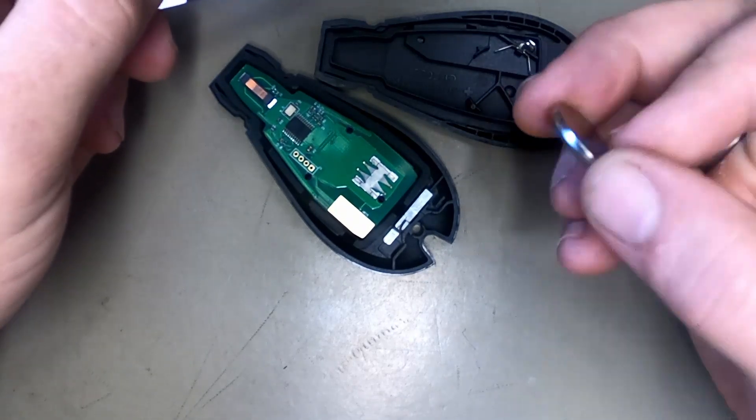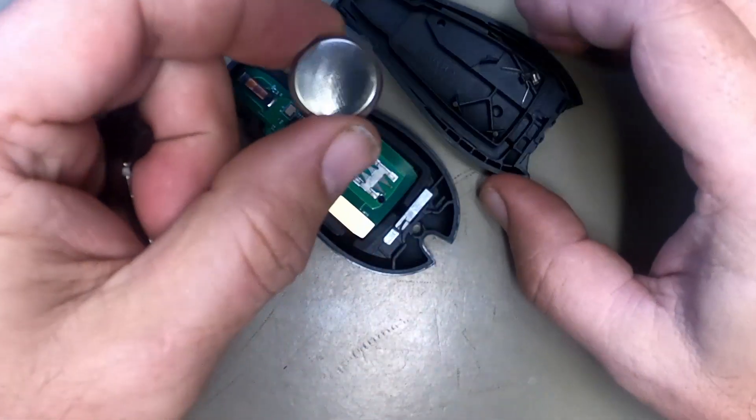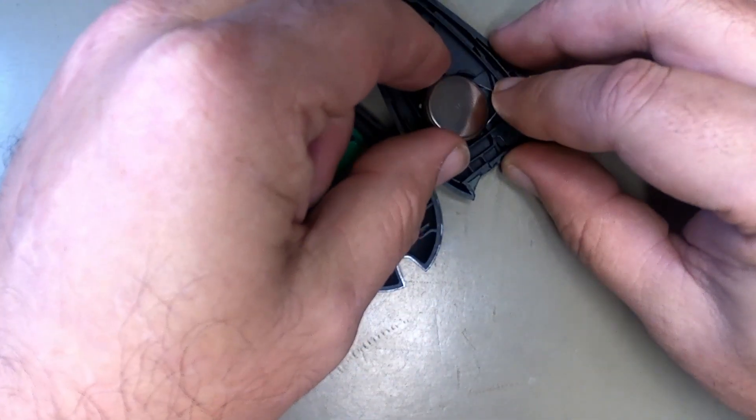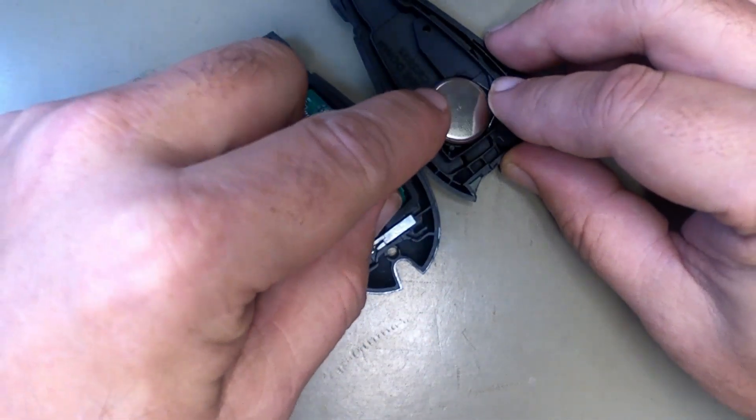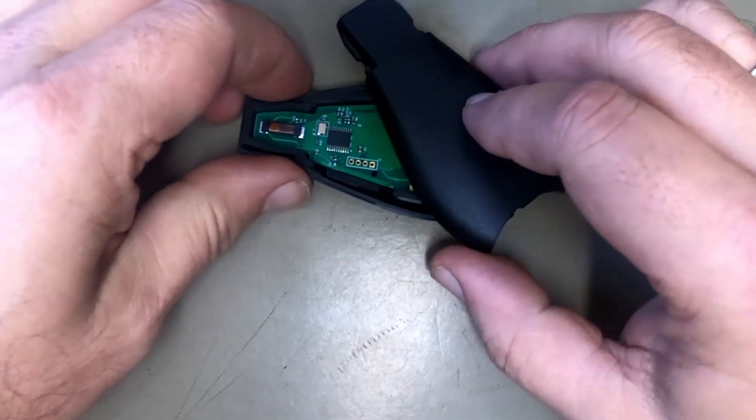So you see our 2032. The backside is your positive here. So when we reassemble this, we'll take the back of it, drop it in there, push in. And you notice the springs hold it together. Now you can go ahead and reassemble this.